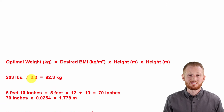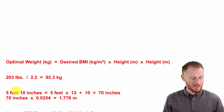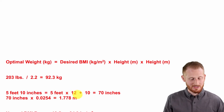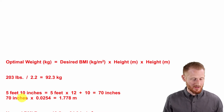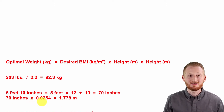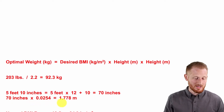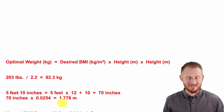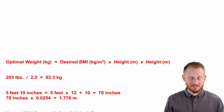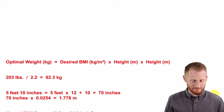So 203 pounds divided by 2.2 gives us 92.3 kilograms. His height was 5 feet 10 inches: 5 feet times 12 inches per foot plus 10 inches gives us 70 inches. Converting to meters: 70 inches times 0.0254 gives us 1.778 meters. Now we have his body mass and height in metric units.